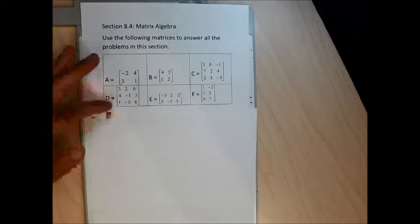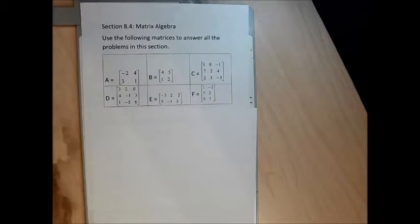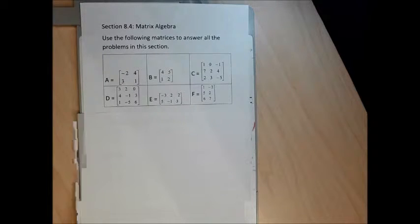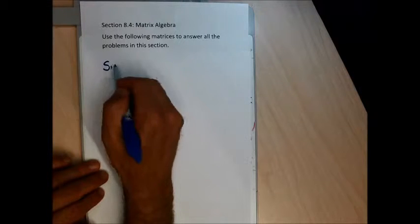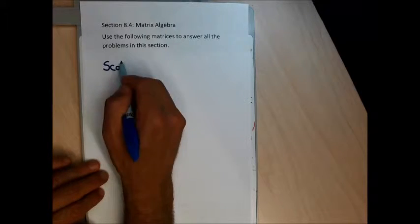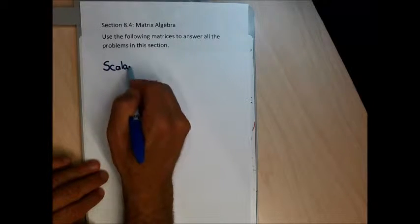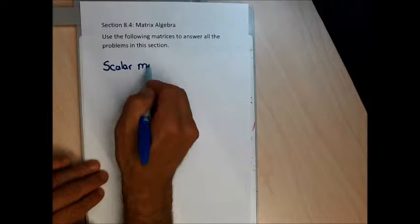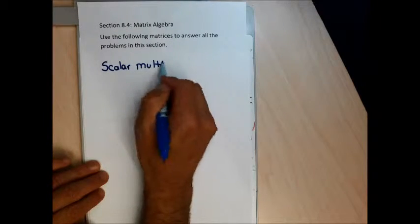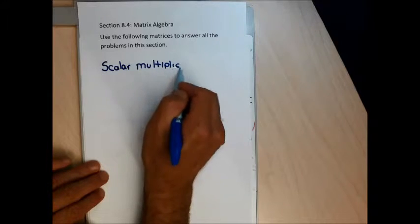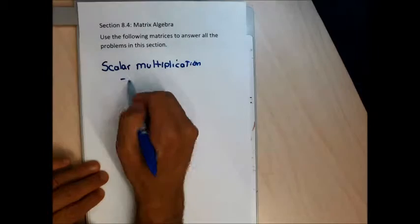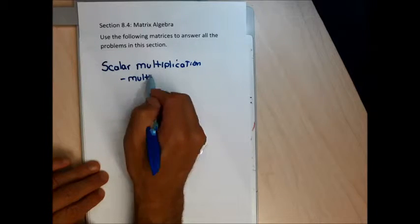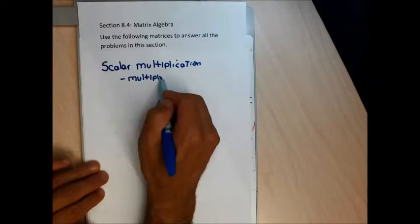We could calculate the determinants of some square matrices, but we're not even going to do that. We're going to do a few operations. The first few problems are asking us to do scalar multiplication, which is just multiplying each number or each entry — multiplying each number in the matrix by the same number.